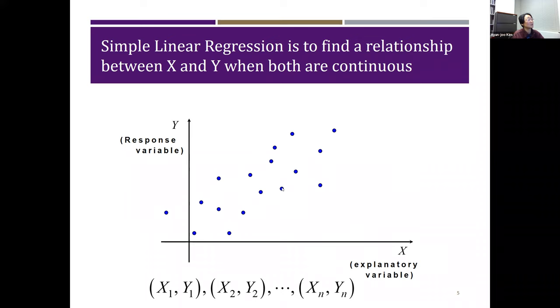Blue dots are the data set, and we didn't really specify the notation for each dot. But those are pairs of x1, y1, x2, y2, and so on.